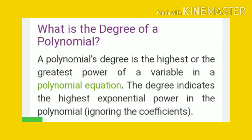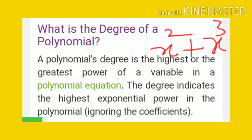Before starting Question 3, let's see what is the degree of a polynomial. A polynomial's degree is the highest or greatest power of a variable in a polynomial equation — the highest index is known as the degree of that polynomial. For example, x² + x³: the greatest index is 3, so 3 is the degree.